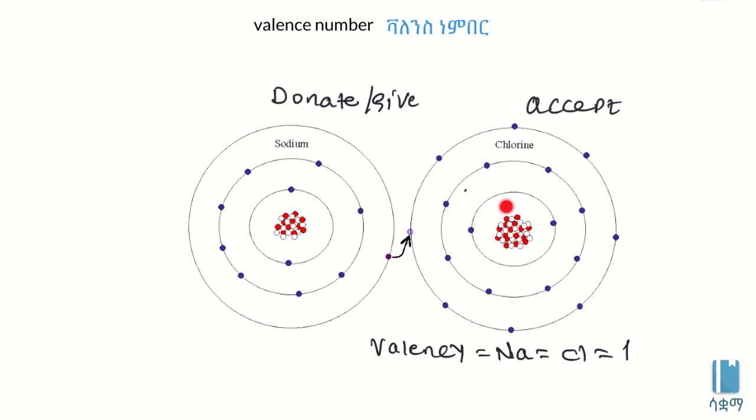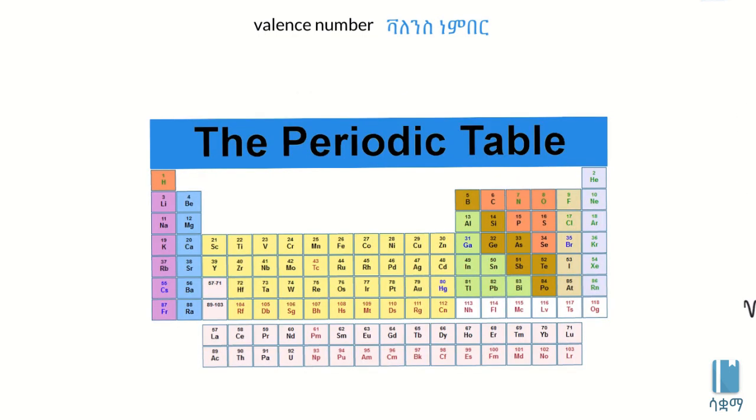Groups 1, 2, and 3 have valence numbers equal to their group number. Groups 5, 6, and 7 have valence numbers of three, two, and one respectively. The valence corresponds to how many electrons they need to donate or accept. Elements in the periodic table are organized by valence electrons, with Group 1 having one, Group 2 having two, and so on.